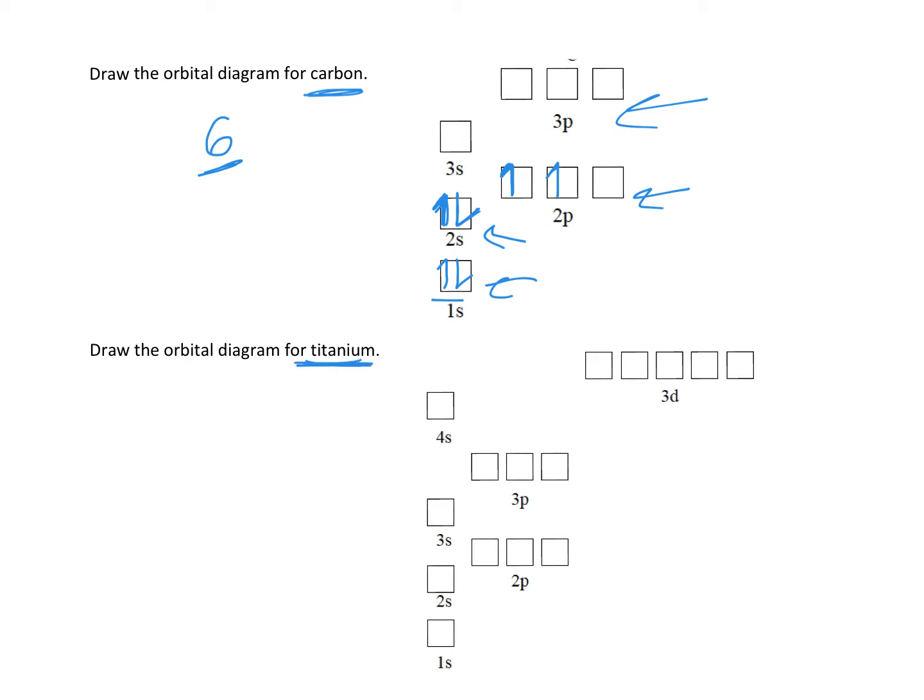Next, titanium has 22 electrons. Starting from the bottom: 1, 2, 3, 4, then one in each - 5, 6, 7, then I pair them. 8, 9, 10, 11, 12, 13, 14, 15, 16, 17, 18, 19, 20, 21, 22. That is the orbital diagram for titanium.